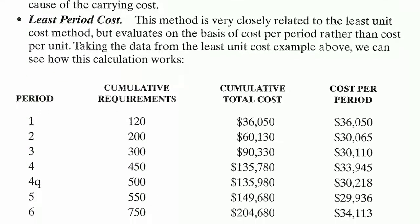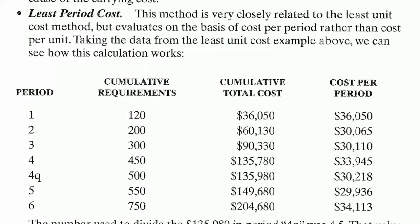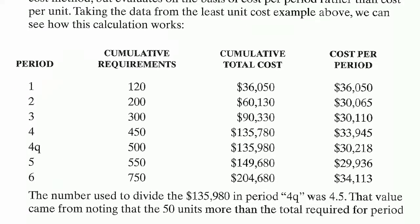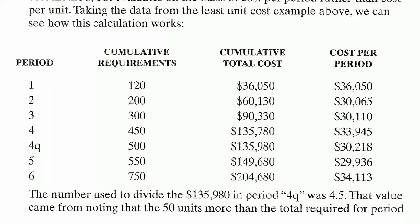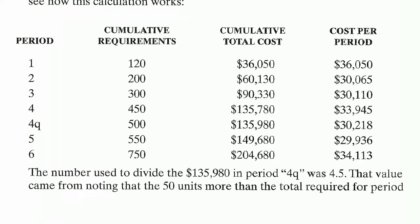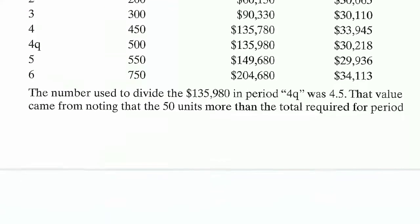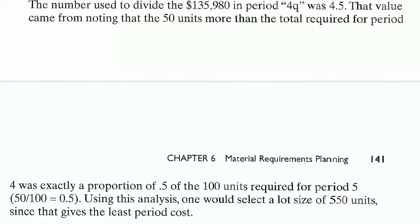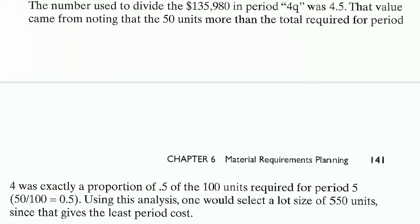Least period cost: this method is very closely related to the least unit cost method, but evaluates on the basis of cost per period rather than cost per unit. Taking the data from the least unit cost example, the number used to divide in period 4Q was 4.5. That value came from noting that the 50 units more than the total required for period 4 represent exactly a proportion of 0.5 of the 100 units required for period 5 (50 divided by 100 equals 0.5). Using this analysis, one would select a lot size of 550 units since that gives the lowest cost per period.